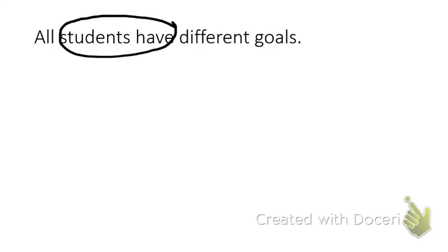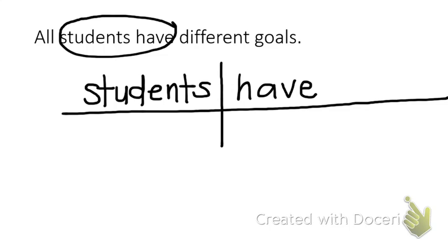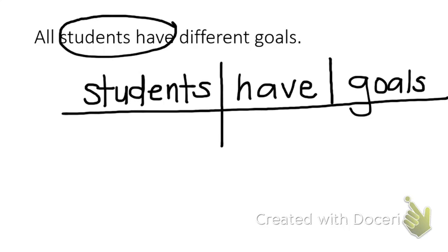We're going to go ahead and start diagramming this sentence by putting the subject and the verb where they belong. Here we have 'students have' in the correct spot. Have what? Goals. Goals is the direct object in this sentence, so it gets diagrammed on that main horizontal line, and the line will be straight.